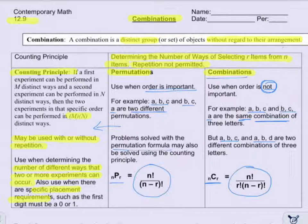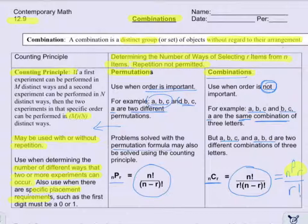We can think about it this way: we can take the number of permutations and divide that by r factorial. So to find the number of combinations, all we have to do is take the number of permutations and then divide it by how many items we're choosing, factorial.